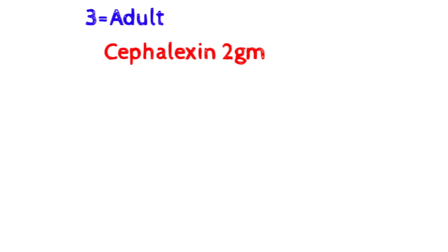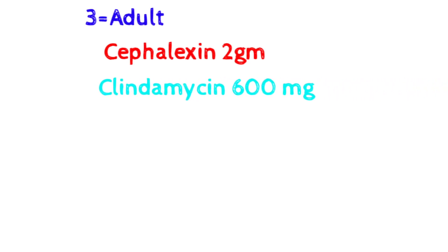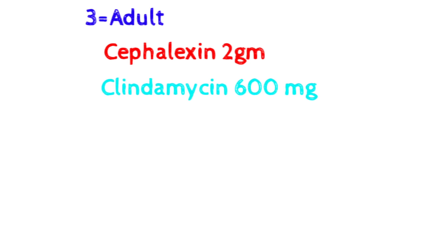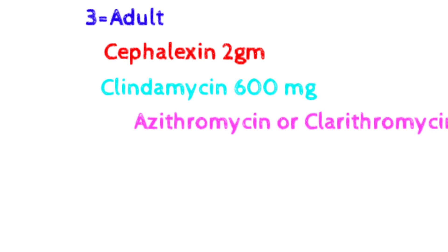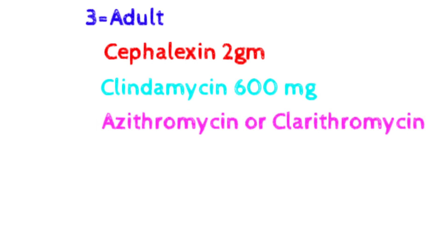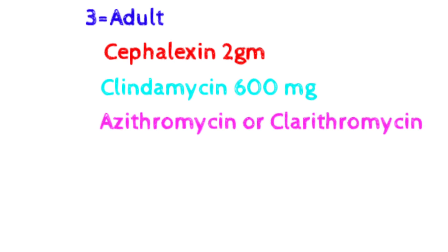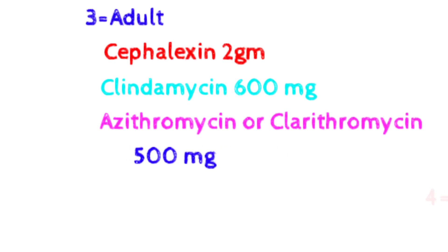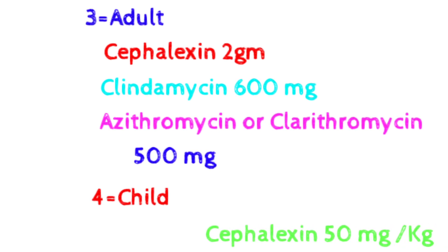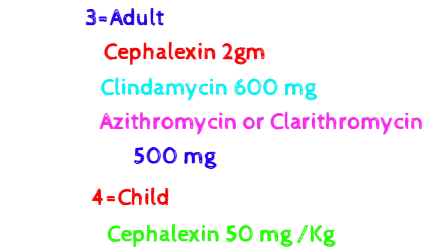For situation three agents: cephalexin adult dose is 2 grams — same as amoxicillin. Clindamycin is 600 mg, and azithromycin or clarithromycin is 500 mg. To remember: clindamycin is the high dose — like a fielder diving high (600 mg) — and azithromycin ends in 'thromycin,' like throwing a ball horizontally, meaning a lower dose (500 mg).